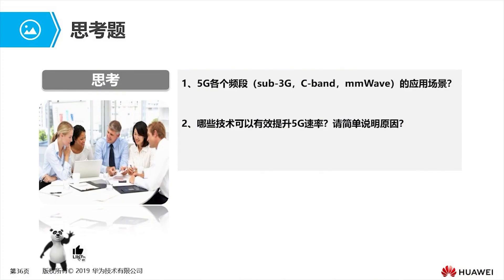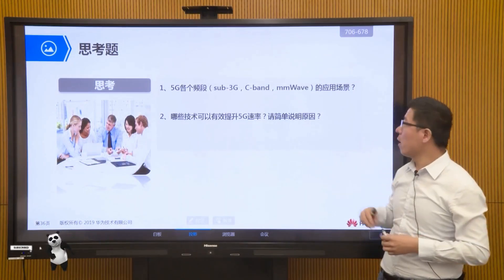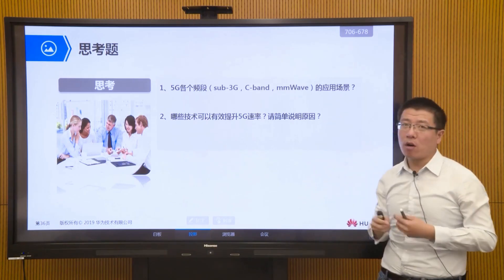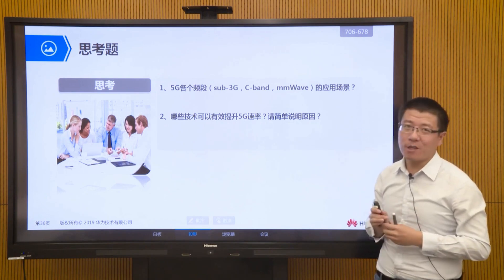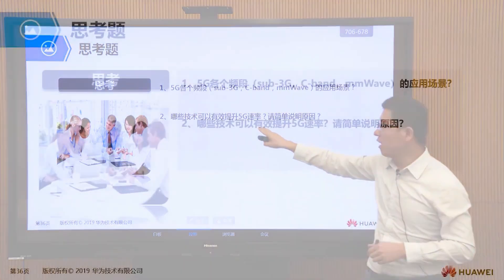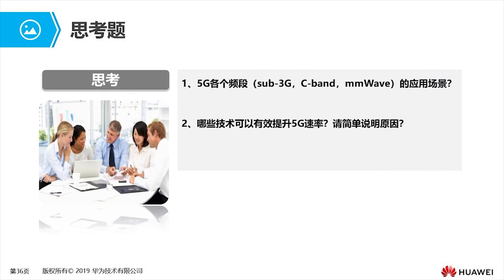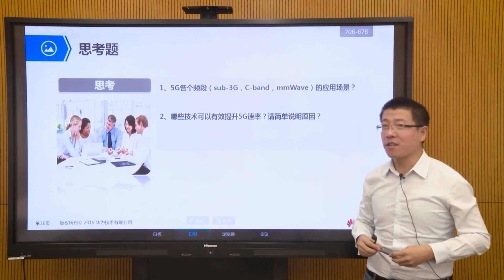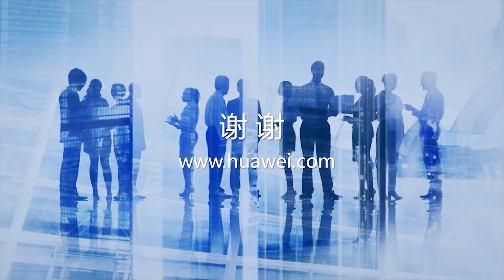Two questions are posed for review. First, given 5G's various frequency bands — sub-3 GHz low frequency, C-band, and future millimeter waves — what are their typical application scenarios? Second, among the air interface key technologies introduced, which ones can enhance 5G speed and why? Technologies like massive MIMO and F-OFDM are highlighted as examples. Everyone is encouraged to answer these questions on the platform.